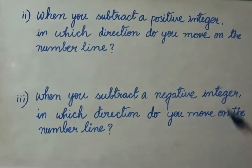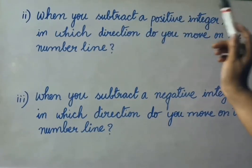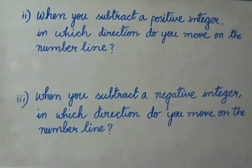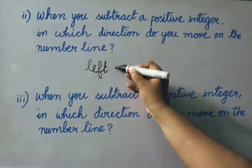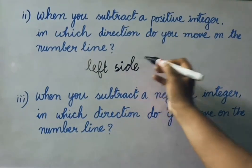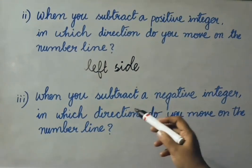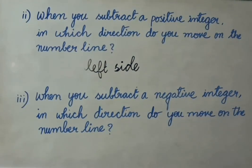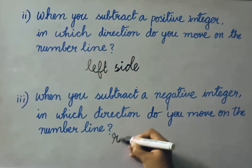See the second question: when you subtract a positive integer, in which direction do you move on the number line? Towards the left side we move on the number line. When you subtract a negative integer, in which direction do you move on the number line? Towards the right side we move on the number line.